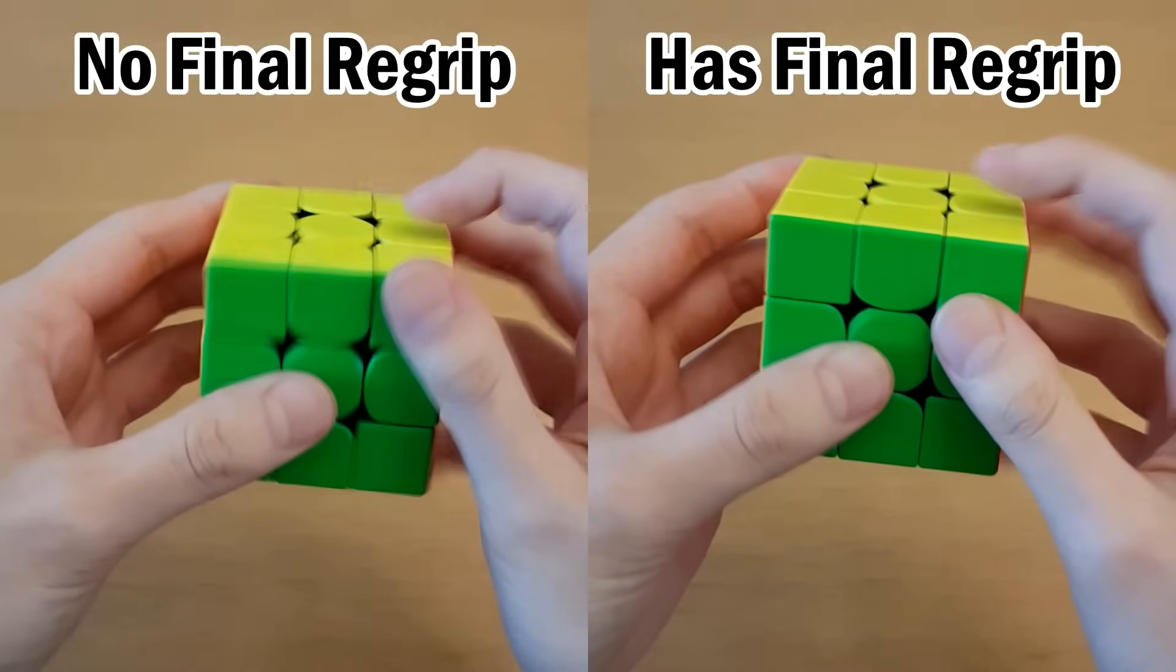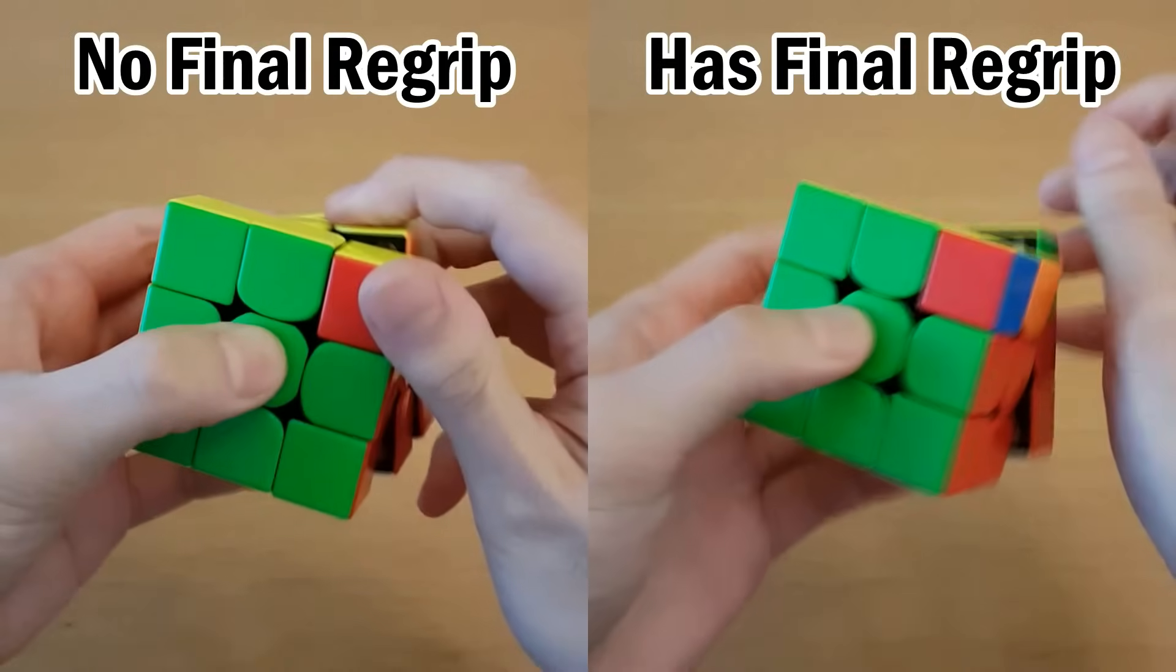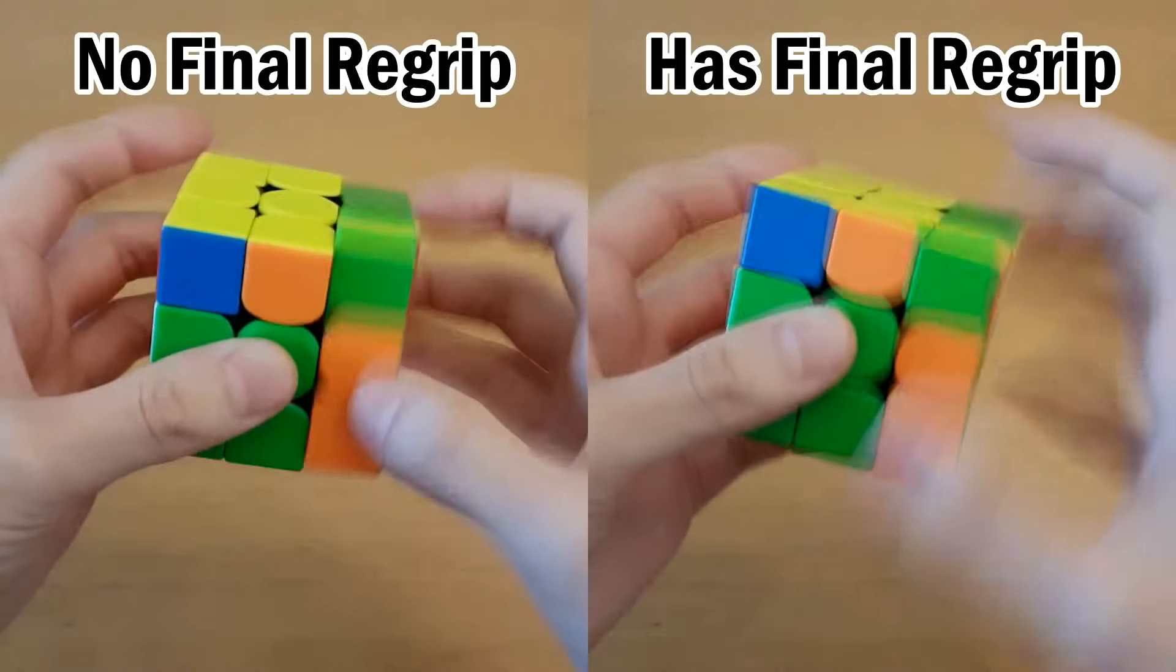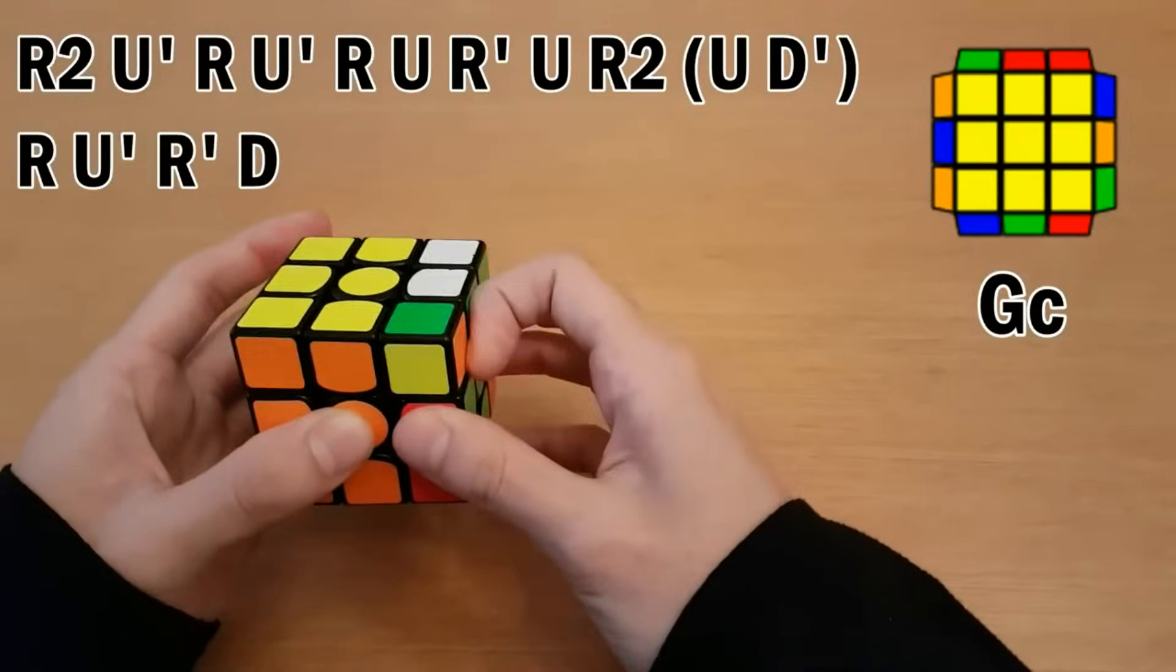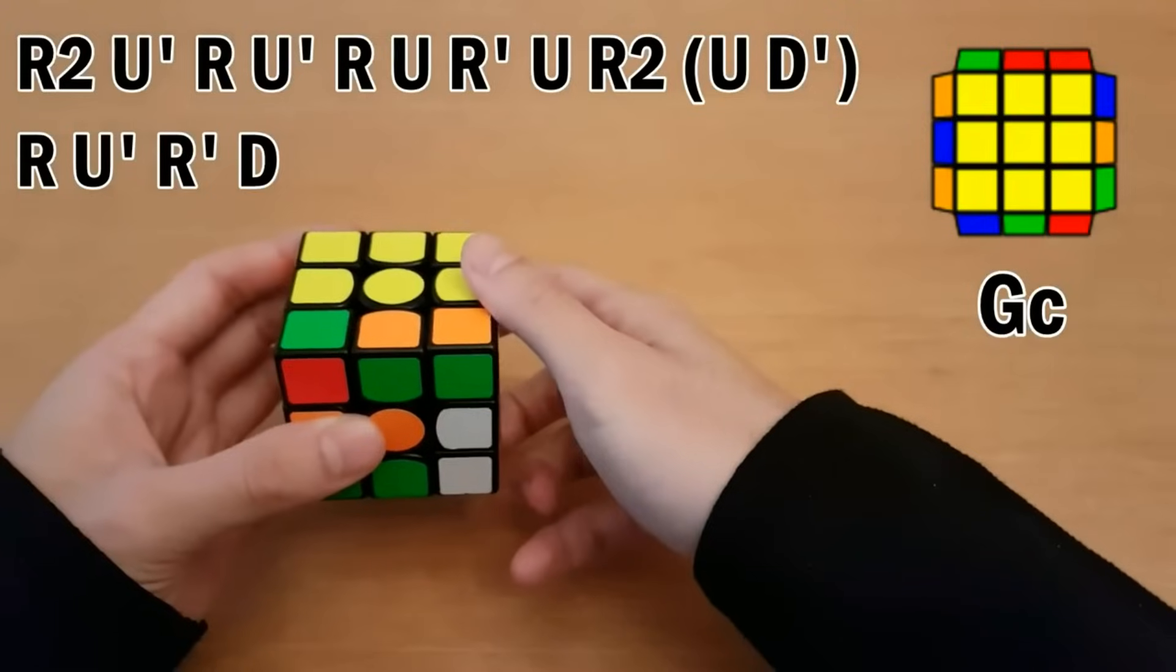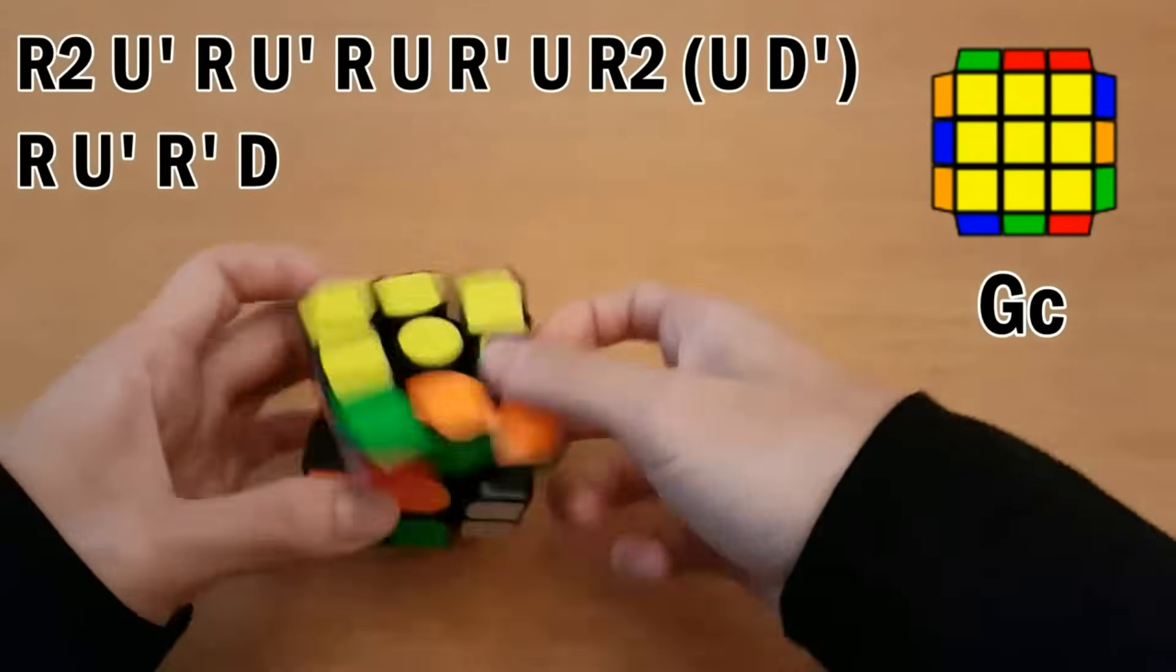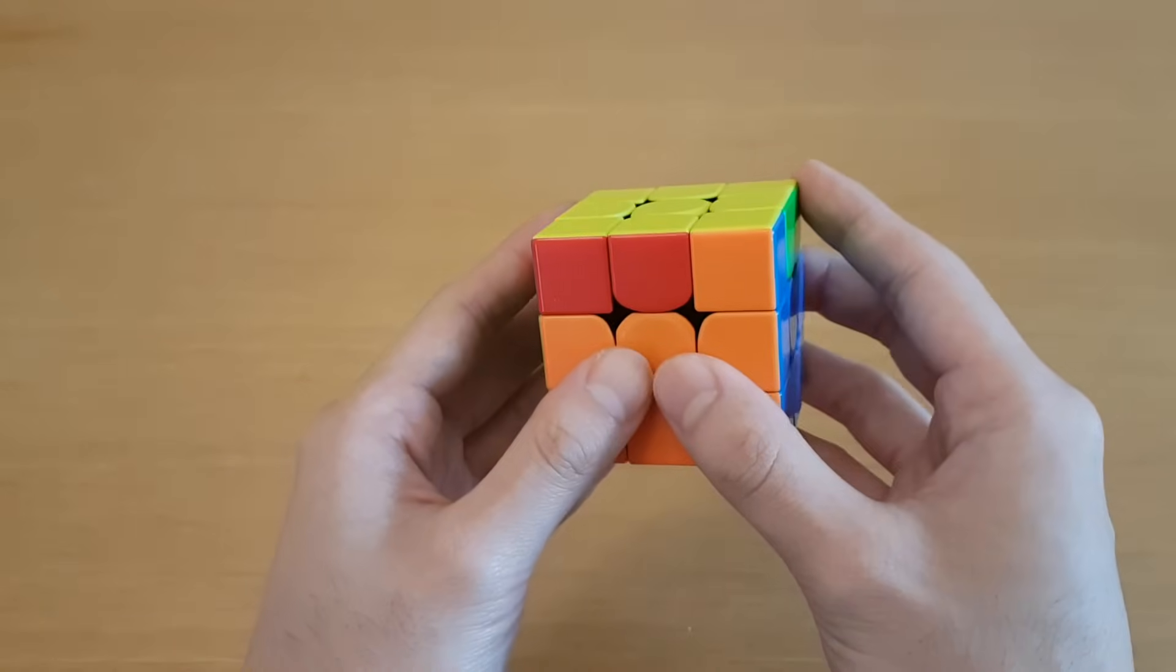Another example of a soft re-grip is the one I showed in the T-perm in my last video about how to turn faster. I also showed how if you remove that re-grip, you don't really make the alg any faster because it is a soft re-grip and doesn't take any time. An example of a hard re-grip is what I do in this G-perm right here. Unless I completely change the way I do this algorithm, with the current way I'm doing the moves, there's no way I can stop that re-grip from taking up time.